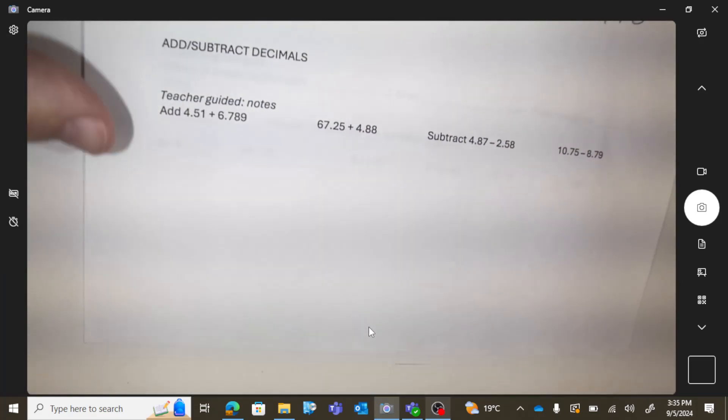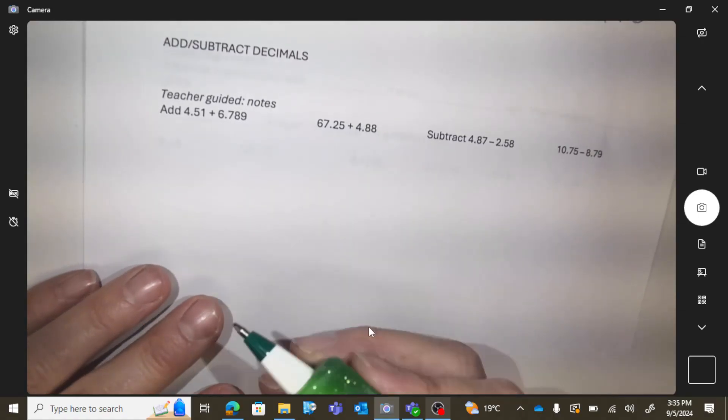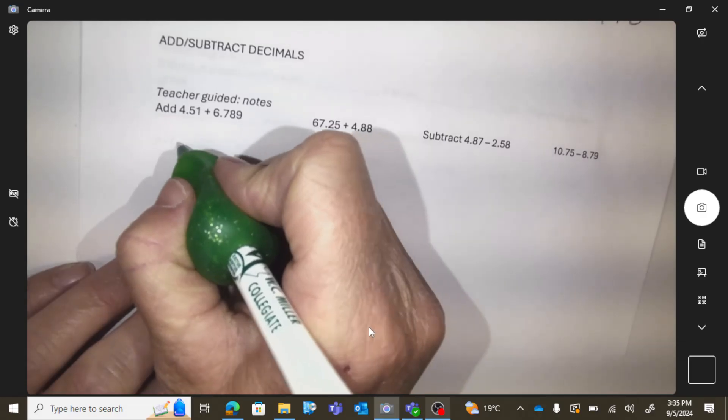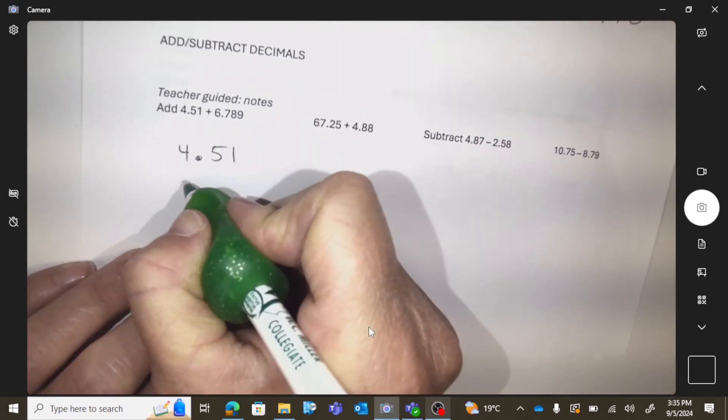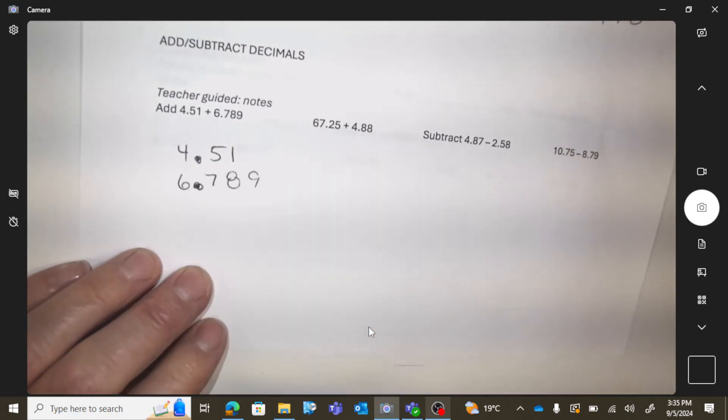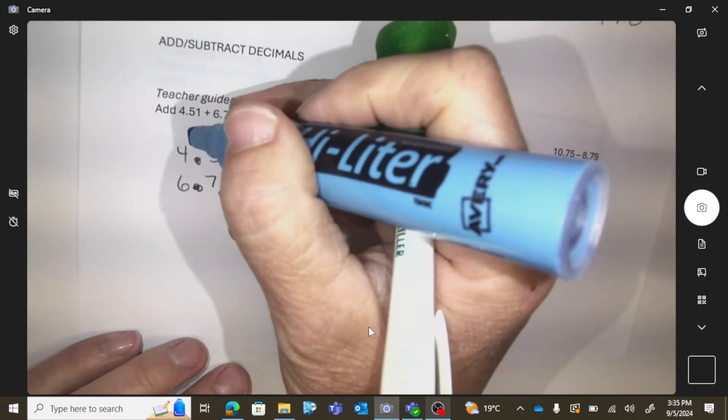Next section is how to add and subtract decimal numbers. The most important thing when working with decimal numbers is to line them up on top of each other, and you need to have the decimals aligned. That's the most important thing.